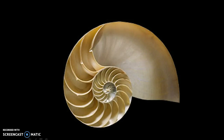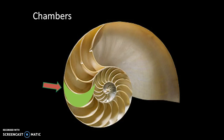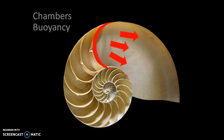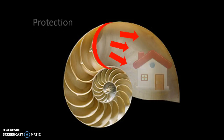Let's talk about some of the details. I'm sure you noticed the different chambers, or sections, of the shell. Each section represents a period of the Nautilus's growth. The chambers are filled with gas that allow the Nautilus to float — this is called buoyancy. The biggest chamber is where the Nautilus actually lives. One of the main purposes of the shell is to protect the Nautilus from predators.